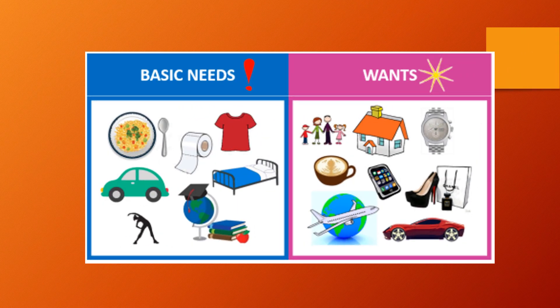There are so many things that we need in order to stay alive. There are also many things that we want that we don't actually need, but they make our lives better in some way. A need is something you have to have — something that you cannot live without. For example, water, food, shelter. A want is something you would like to have, but it is not necessary for your survival. For example, a cell phone, music, a car.